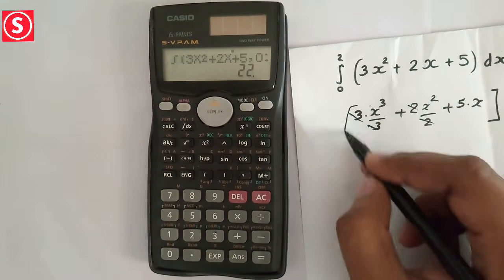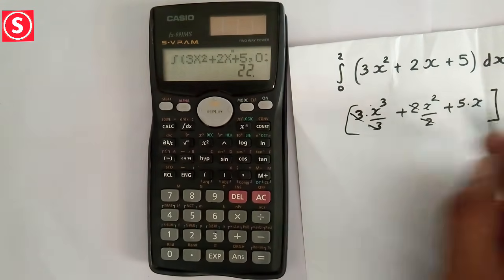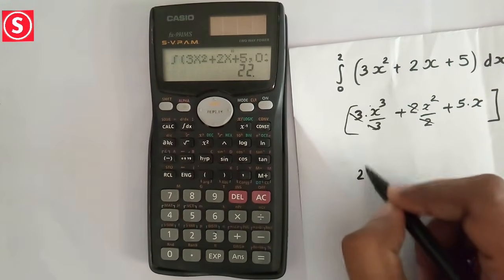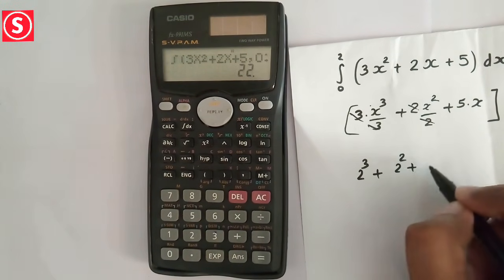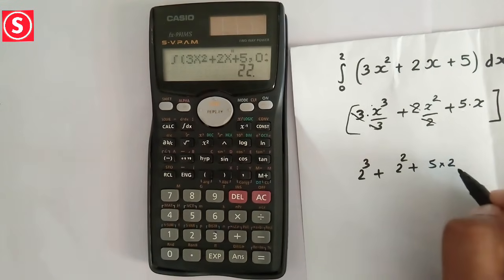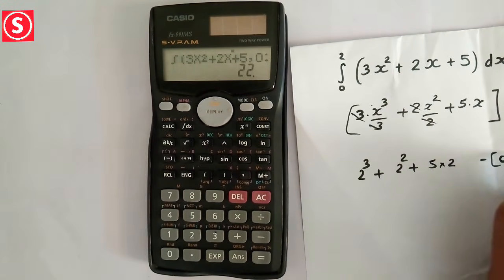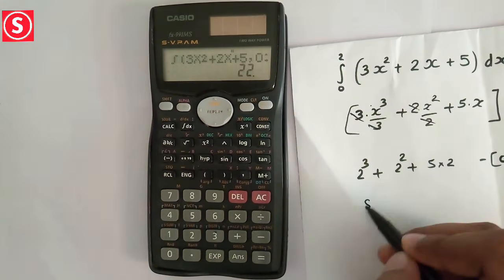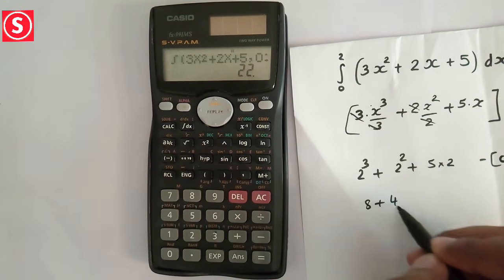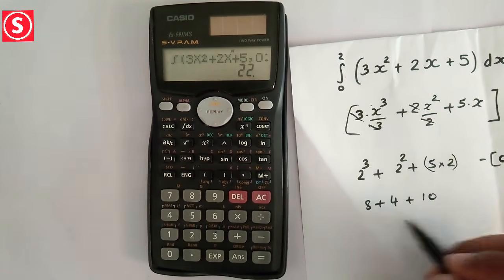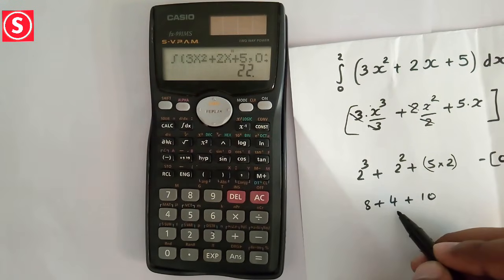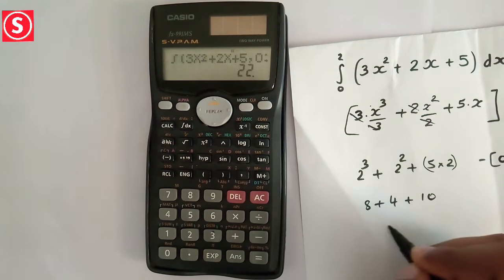So if you are putting the upper limit 2, then it will be 2³ plus 2² plus 5 into 2, minus 0. 2³ is 8, 2² is 4, plus 5 into 2 is 10. So 8 plus 4 is 12, 12 plus 10 is 22.